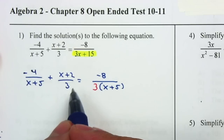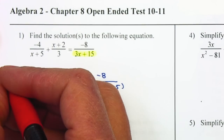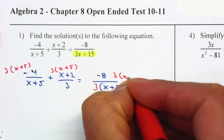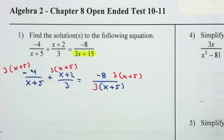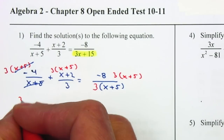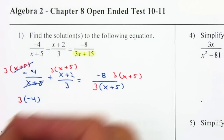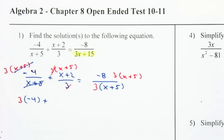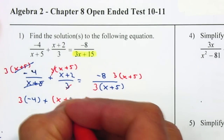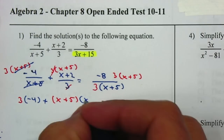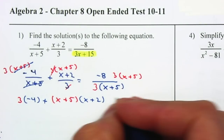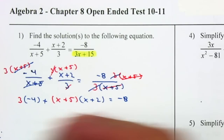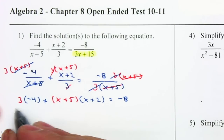Now remember, whenever we have an equation our whole purpose is to cancel the denominator. So I'm going to multiply each term by 3(x + 5). On the first term the (x + 5) cancels, giving us 3 × (-4). On the next term the 3s cancel, leaving (x + 5) × (-4x + 5). On the last term, both the 3s and the (x + 5) cancel. Notice that all denominators cancel — if you are left with a denominator, you did something wrong.